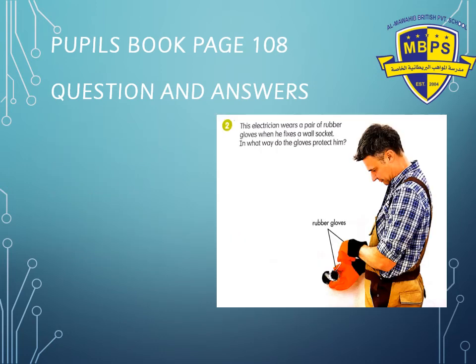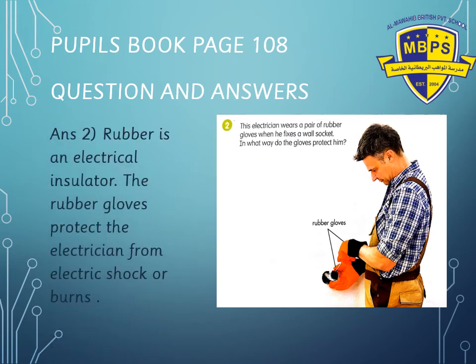Question number 2: An electrician wears a pair of rubber gloves when fixing a wall socket. In what way do the gloves protect him? The answer: rubber is an electrical insulator, so the gloves protect the electrician from electric shock and burns. Very good!